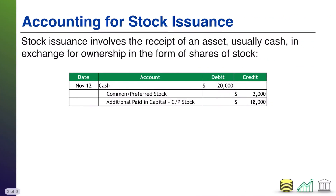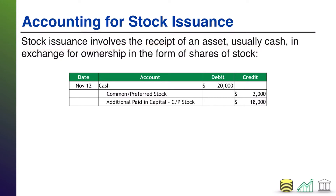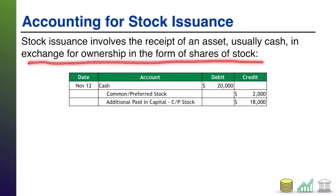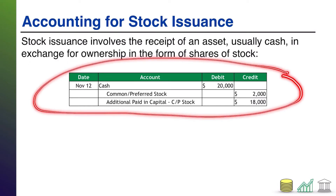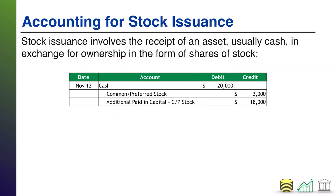Stock issuance involves the receipt of an asset — usually cash — in exchange for ownership in the form of shares of stock. Going forward I'm mostly going to treat it as cash received in exchange for stock. Let's take a look at how the journal entry works.